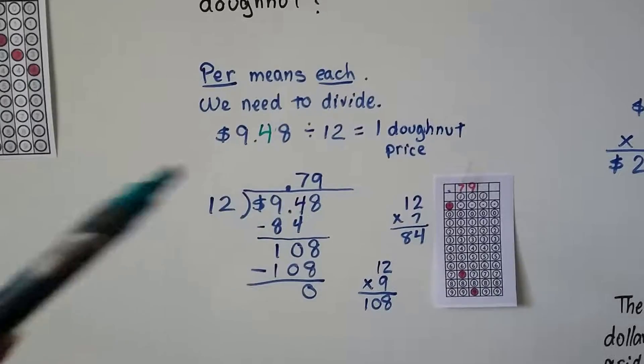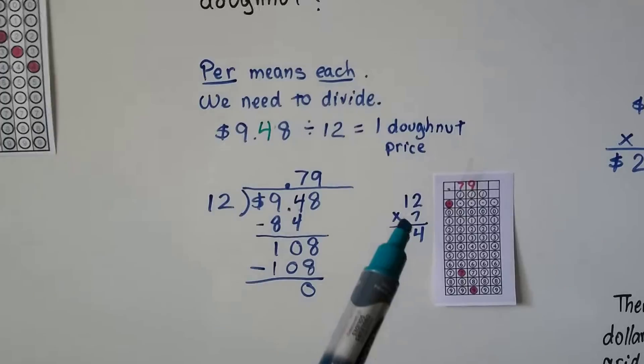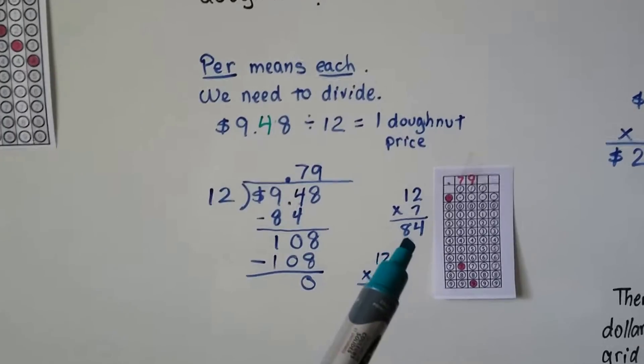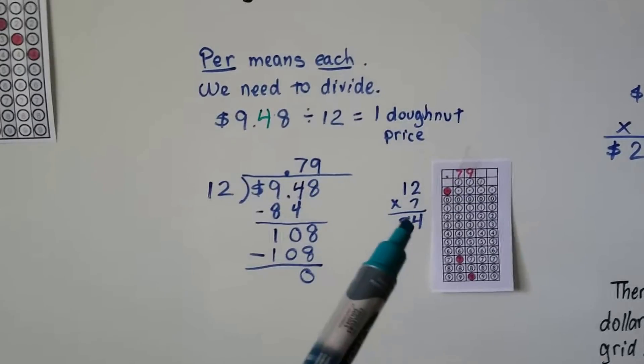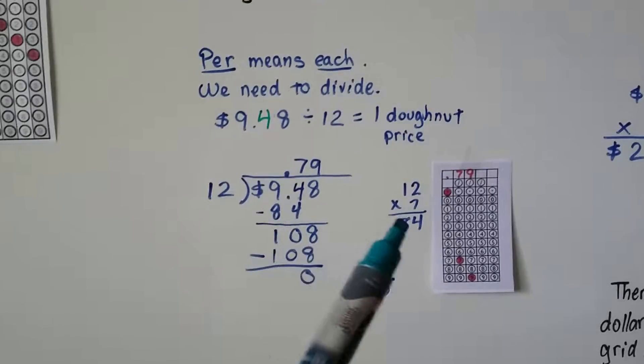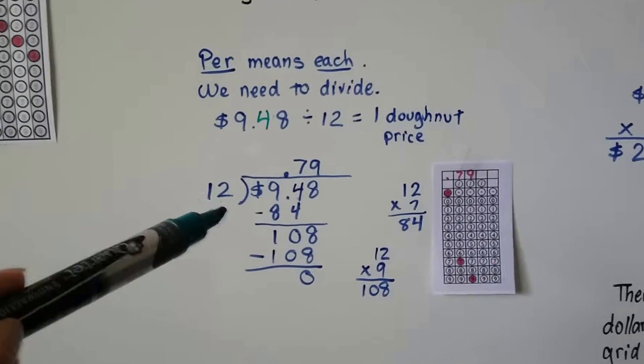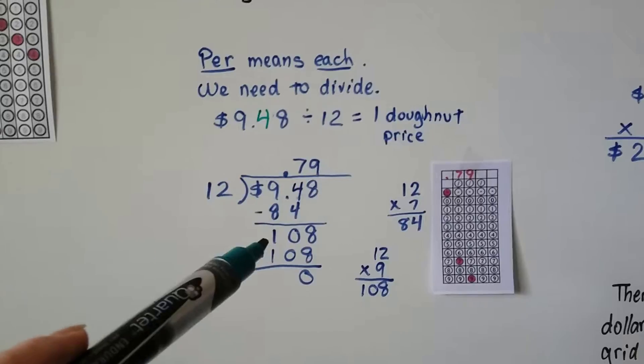So we'd say 12 goes into 94 how many times? A little multiplication on the side. 12 times 7 is 84 and that's as many times as it can go in because 12 times 8, that's too many. So we do the 12 times 7. We get our 84.